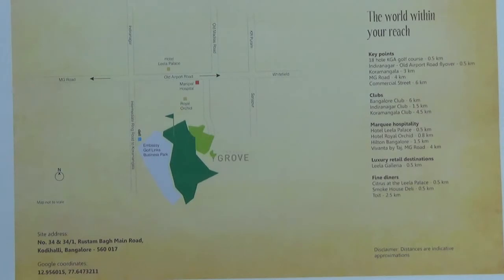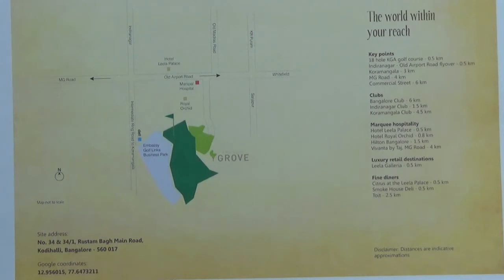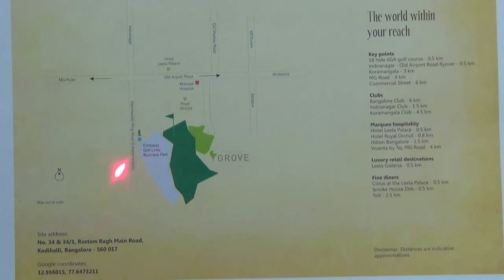Now let me tell you about some of the key locations nearby this project. You have an 18-hole KGA Golf Course at a distance of 0.5 km. Also, the Indiranagar Old Airport Road flyover is 0.5 km away. Koramangala is 3 km, MG Road is 4 km, and Commercial Street is 6 km. Hotel Leela Palace is 0.5 km, Vivanta by Taj is 4 km, and Leela Galleria is 0.5 km. The nearest metro station is at 2 km, and Embassy GolfLinks Business Park is just 1 km from this project.